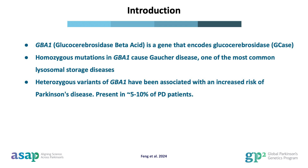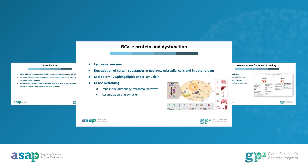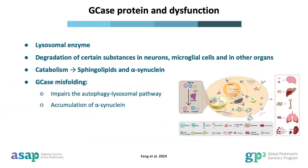So far, 5 to 10 percent of PD patients carry GBA1 mutations. The GCase protein is a lysosomal enzyme synthesized in the endoplasmic reticulum, and it plays an important role in the degradation of certain substances within neurons. Specifically, GCase is involved in the degradation of sphingolipids into ceramide and glucose. However, misfolded GCase protein can induce endoplasmic reticulum stress or impaired degradation, triggering the unfolded protein response and disrupting the autophagy-lysosomal pathway. This disruption leads to the accumulation of alpha-synuclein, which promotes neurodegenerative changes.